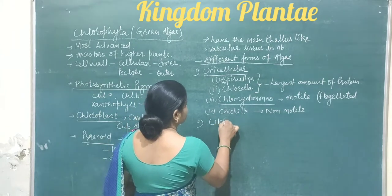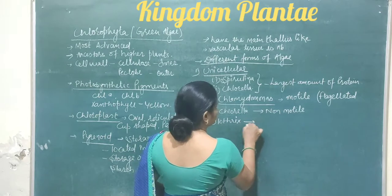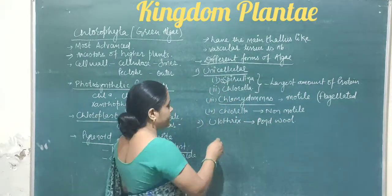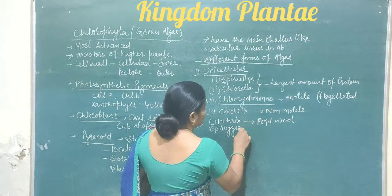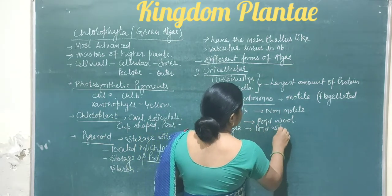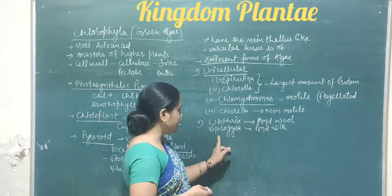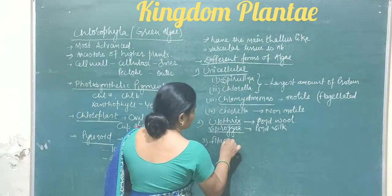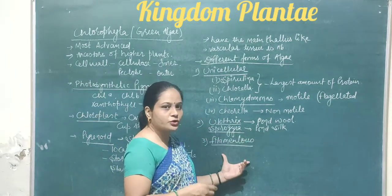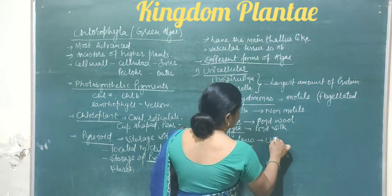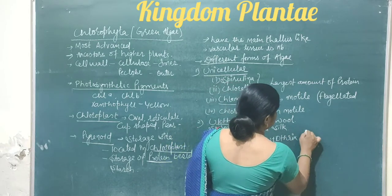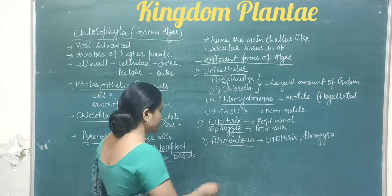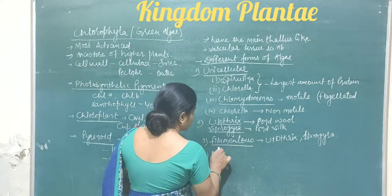The next form is Ulothrix, also known as pond wool. Spirogyra is known as pond silk. Both Ulothrix and Spirogyra are filamentous algae, included in the filamentous structural category.